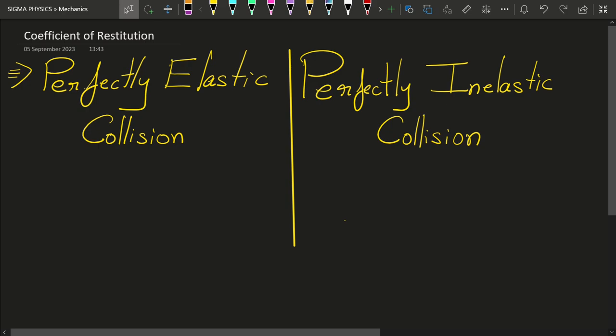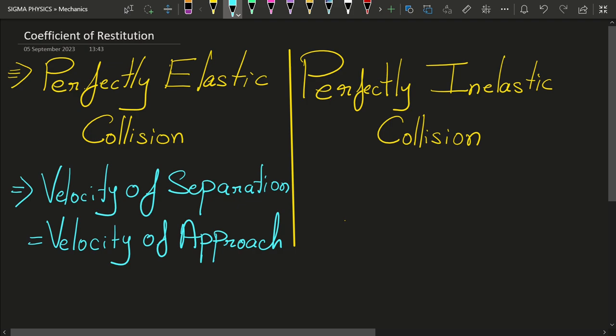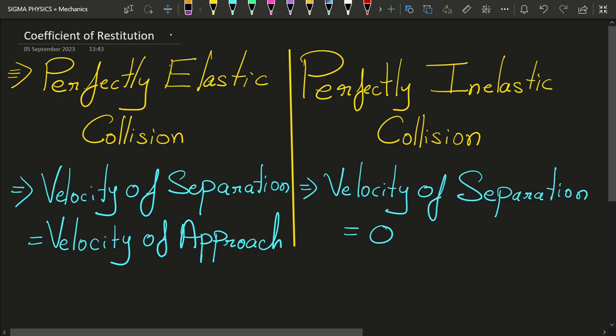For a perfectly elastic collision, the velocity of separation equals the velocity of approach. Whereas for a perfectly inelastic collision, the velocity of separation is zero because the two bodies travel as a single body after the collision. But in general, a body is neither perfectly elastic nor perfectly inelastic.